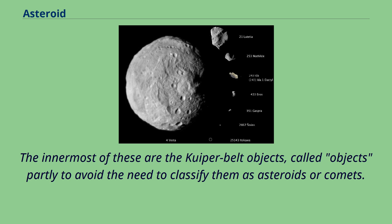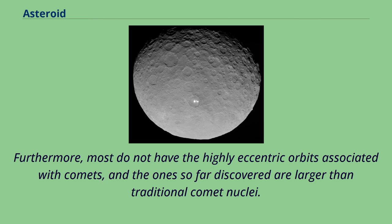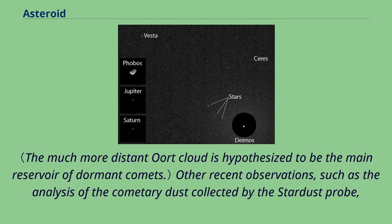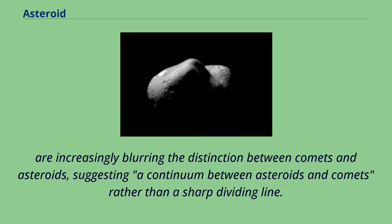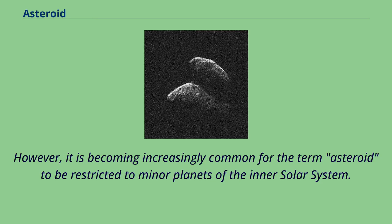The innermost of these are the Kuiper belt objects, called objects partly to avoid the need to classify them as asteroids or comets. They are thought to be predominantly comet-like in composition, though some may be more akin to asteroids. Furthermore, most do not have the highly eccentric orbits associated with comets, and the ones so far discovered are larger than traditional comet nuclei. Other recent observations, such as the analysis of cometary dust collected by the Stardust probe, are increasingly blurring the distinction between comets and asteroids, suggesting a continuum rather than a sharp dividing line. The minor planets beyond Jupiter's orbit are sometimes also called asteroids, especially in popular presentations, but it is becoming increasingly common for the term to be restricted to minor planets of the inner solar system.